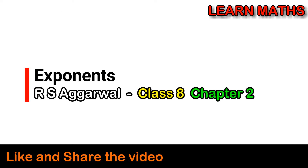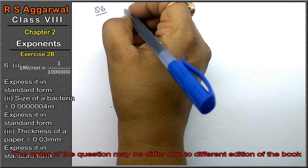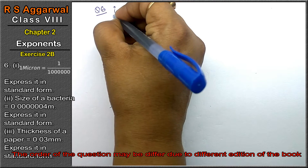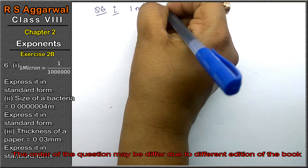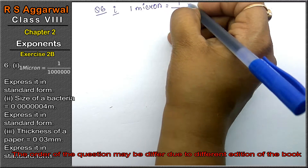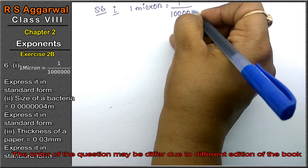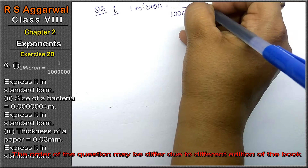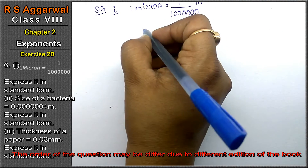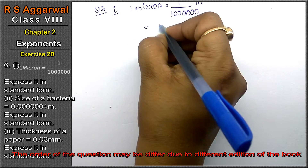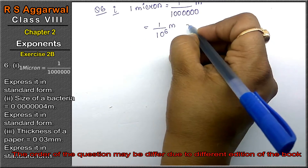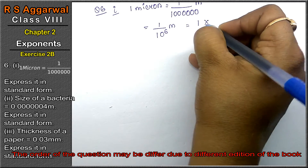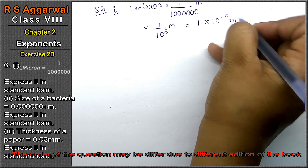Let's do question number six of Exercise 2B, that is Exponents. First part: one micron equals one upon six zeros — that is, 1/1,000,000 meters. Express it in standard form. We write it as 1 upon 10 to the power 6, or 1 × 10⁻⁶ meters. That is the answer.